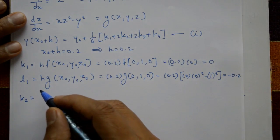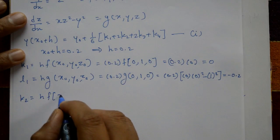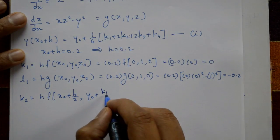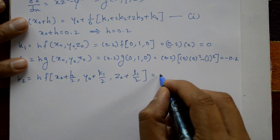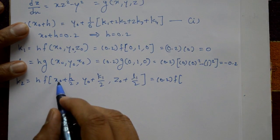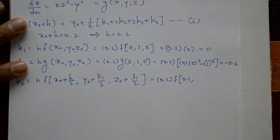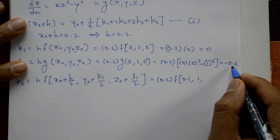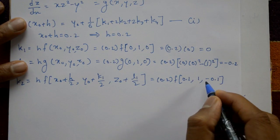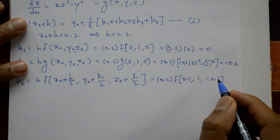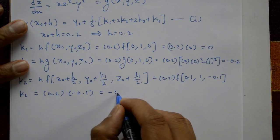k2 = h·f(x₀ + h/2, y₀ + k1/2, z₀ + l1/2) = 0.2·f(0.1, 1 + 0, 0 + (-0.1)) = 0.2·f(0.1, 1, -0.1). Since f = z, k2 = 0.2 × (-0.1) = -0.02.